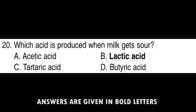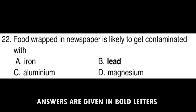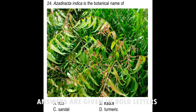Color blindness. The compound used in anti-malarial drug is Chloroquine. Which acid is produced when milk gets sour? Lactic acid. In which animal is skin a respiratory organ? Frog. Food wrapped in newspaper is likely to get contaminated with Lead. Which soil is rich in organic debris? Humus soil.